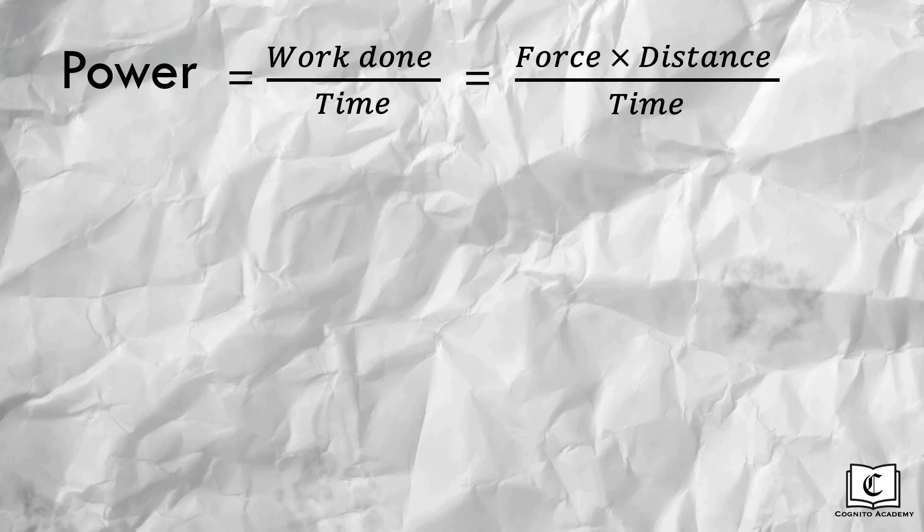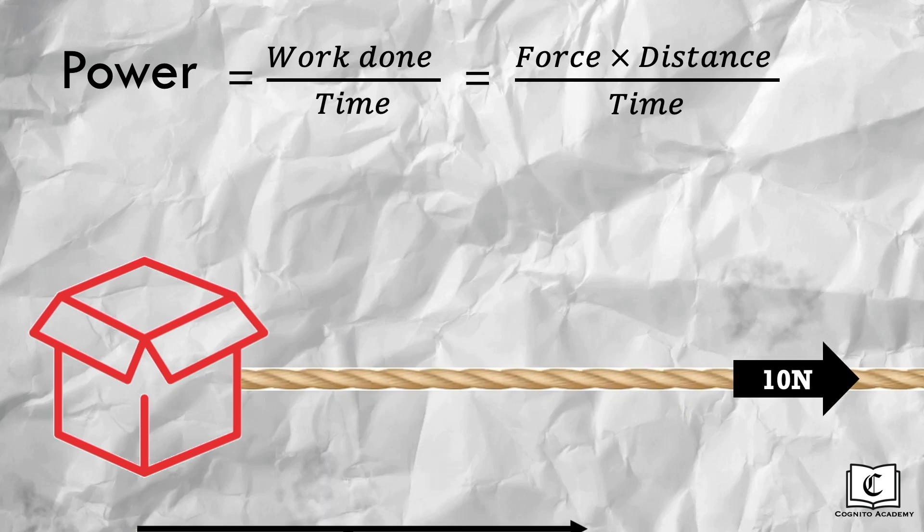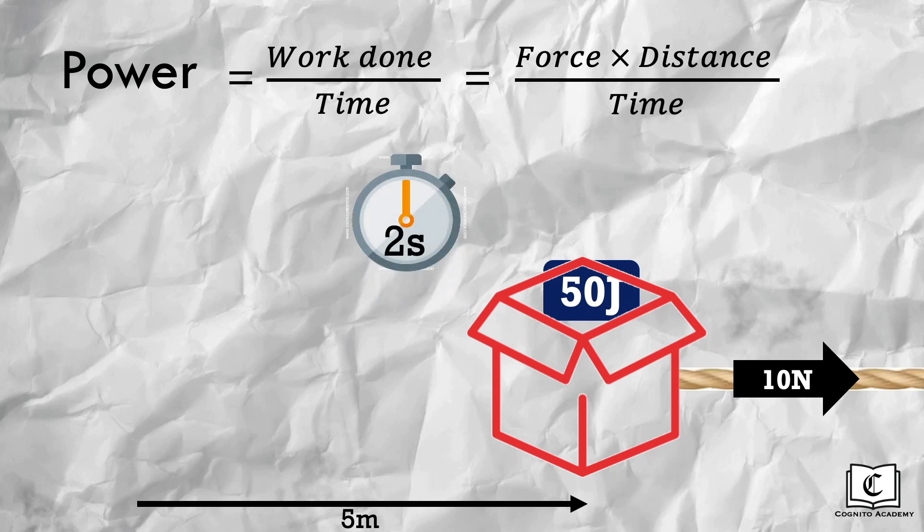In the last lesson, we also calculated the work done on the box by the string by taking 10 newtons of force by the string multiplied by the distance in the direction of the force which is 5 meters. This gives us a work done of 50 joules on the box by the string. Now, we are told that all this happened within a duration of 2 seconds. Hence, calculate the power generated by the string.